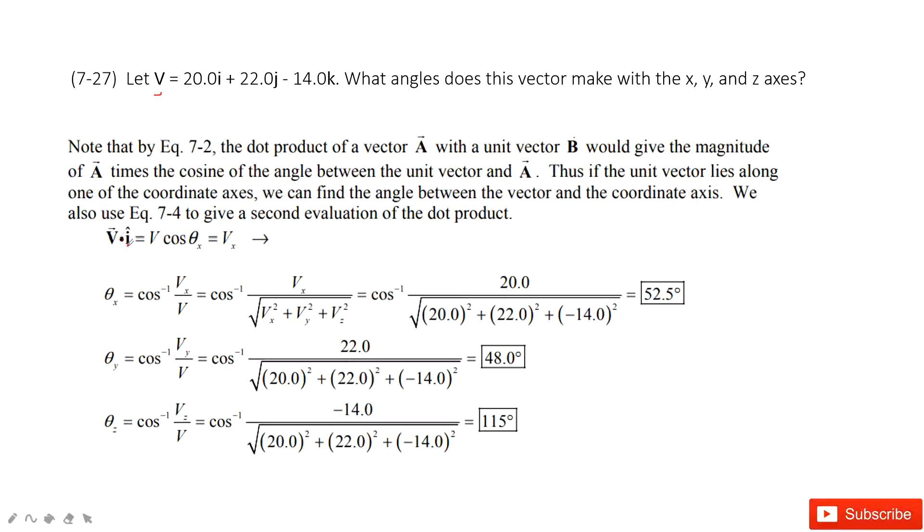we consider v·i equals the magnitude of v times the magnitude of i, which is 1, times cos(θx). This should equal the x-component vx.